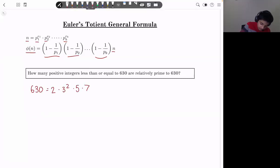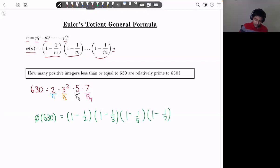630 is just equal to 2 times 3 squared times 5 times 7. So now we're going to apply quotients. p1 is 2, this is p2, this is p3, and this is p4. So our expression is just going to be totient of 630 is equal to 1 minus 1 over p1 is 2, p2 is 3, p3 is, sorry not 4, should be 5, and p4 is just 7, then multiply it by 630.